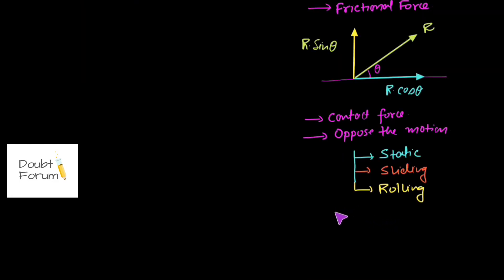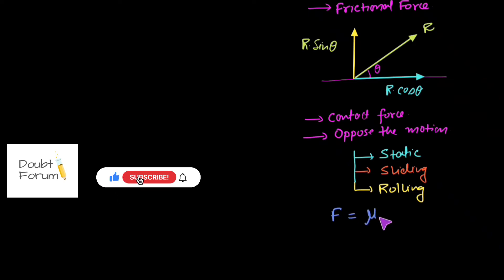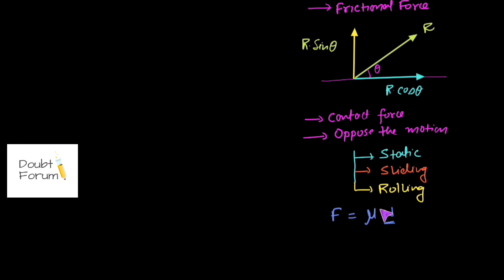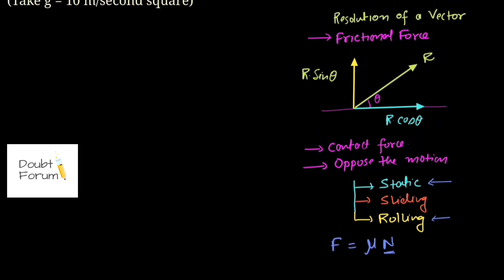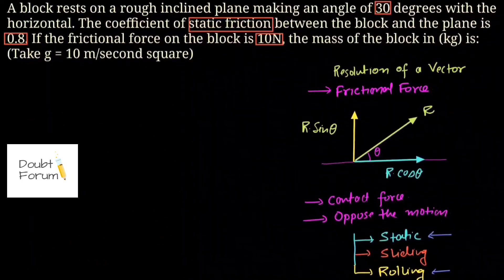The formula of frictional force F is given as mu times N, where N is the normal force and mu is the coefficient of friction. For static friction, mu is the coefficient of static friction; for sliding friction it is the coefficient of sliding friction; and for rolling friction it is the coefficient of rolling friction. The value of static friction is not constant — it keeps adjusting itself up to a certain limit. For more detail, you can follow the link given in the description.